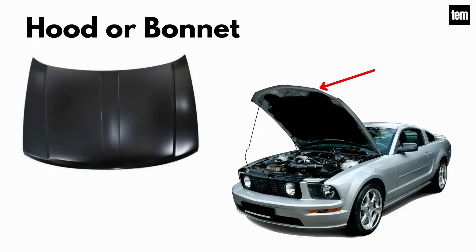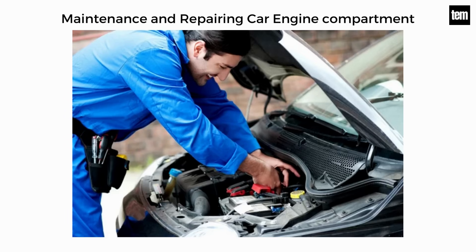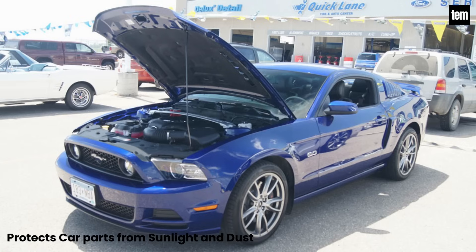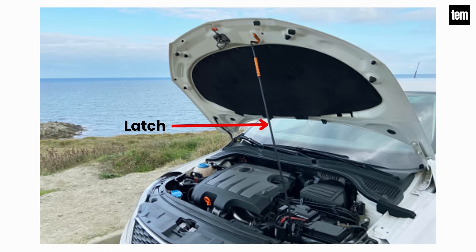Hood or bonnet. The car hood is also known as a bonnet in some countries. It is a thin sheet cover that is hinged and rests over the engine of motor vehicles. The hood can open to allow direct access to the engine compartment for maintenance and repair purposes. It also protects car parts from direct sunlight and dust. A hidden latch is commonly used to hold it securely.